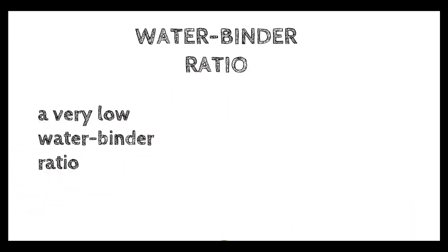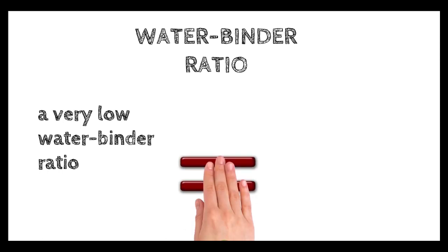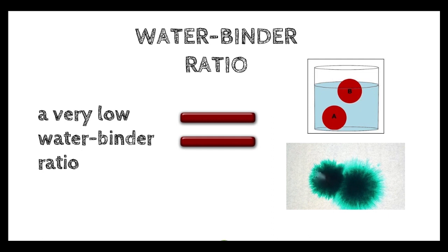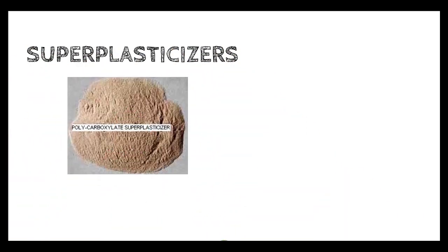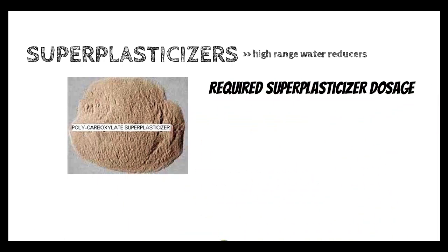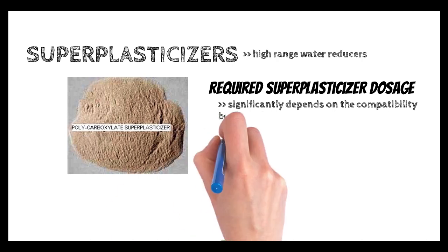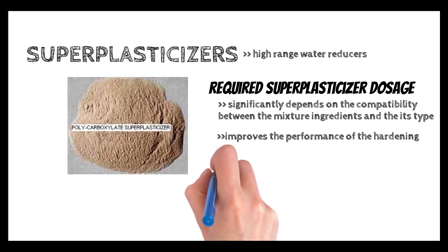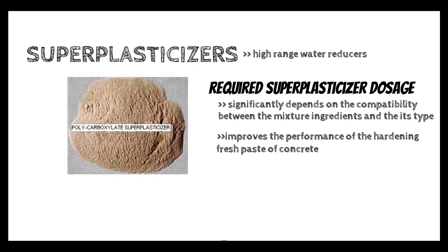Water-binder ratio. A very low water-binder ratio is used in UHPC mixtures. This ratio is to achieve maximum relative density and spread flow. Superplasticizers, also known as high-range water reducers, resolve the reduced workability of UHPC caused by its very low water-binder ratio. The required superplasticizer dosage significantly depends on the compatibility between the mixture ingredients and its type. This effect drastically improves the performance of the hardening fresh paste of concrete.